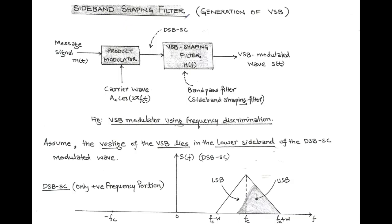Next, we discuss the generation of vestigial sideband, or modulation of VSB. Here we use a special filter called a sideband shaping filter, and for the generation of VSB we use a technique called the frequency discrimination method or filter method. In this method, a product modulator is used followed by a bandpass filter — a specially designed filter called a sideband shaping filter — with transfer function H(F).